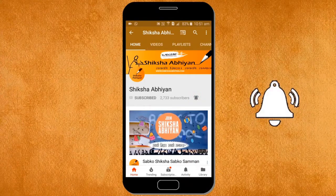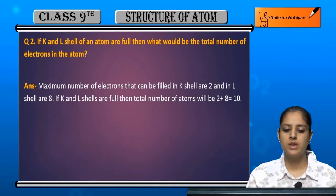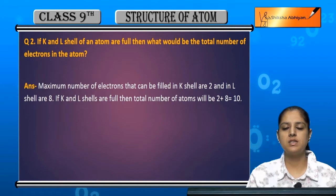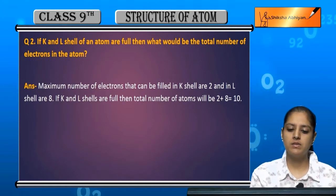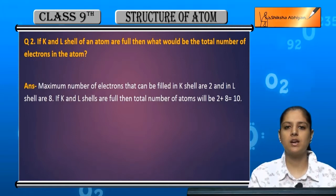Now question number two: If K and L shell of an atom are full, then what would be the total number of electrons in the atom? Agar diya gaya hai ki K aur L shell ek atom ki full hai to batana hai ki iske andar kitne electrons hain.